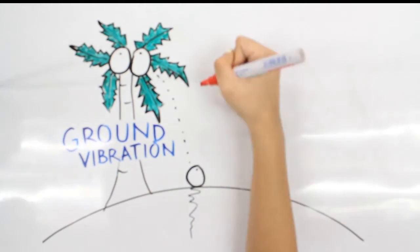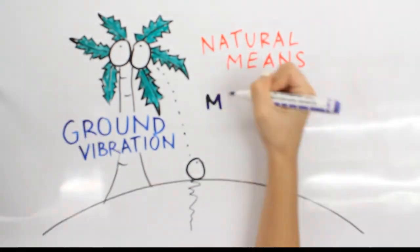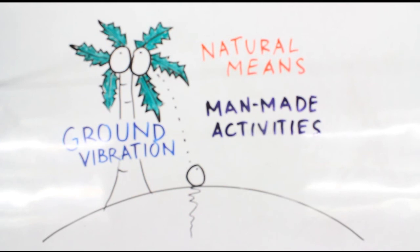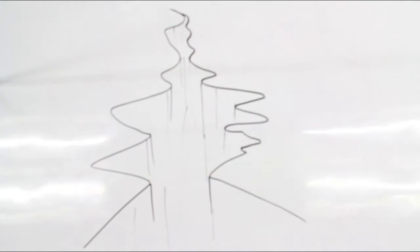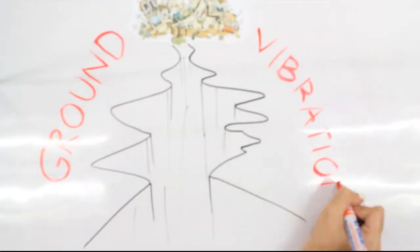Ground vibrations are generated either through natural means or man-made activities. Natural phenomena such as earthquakes strike without notice, shaking the earth by producing large magnitudes of ground vibrations.